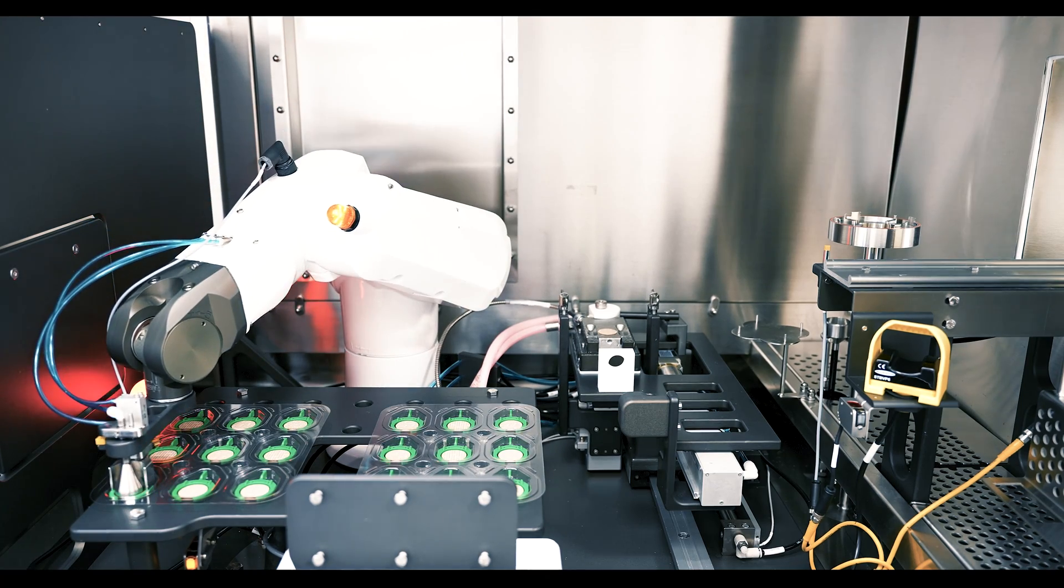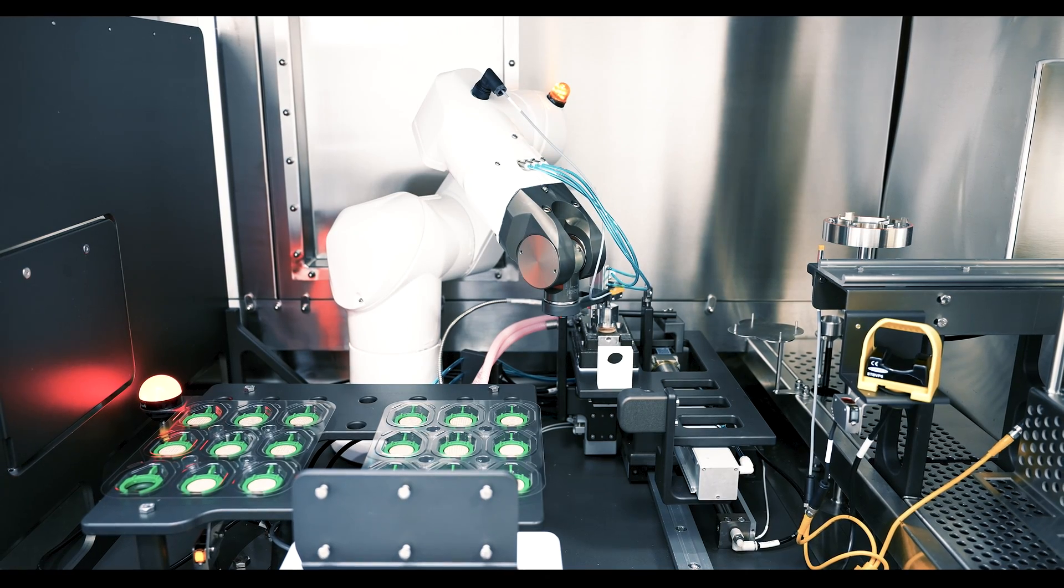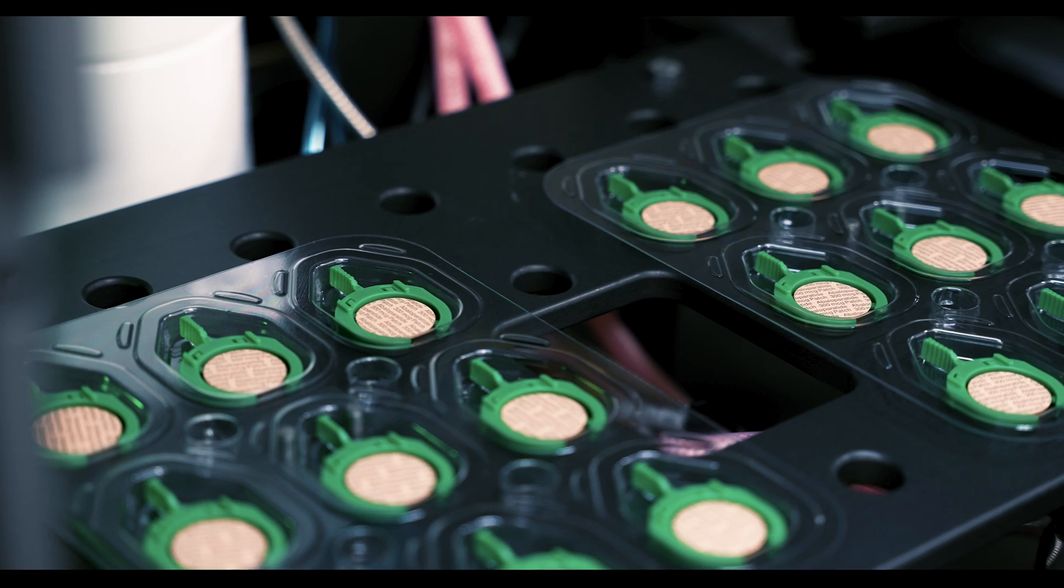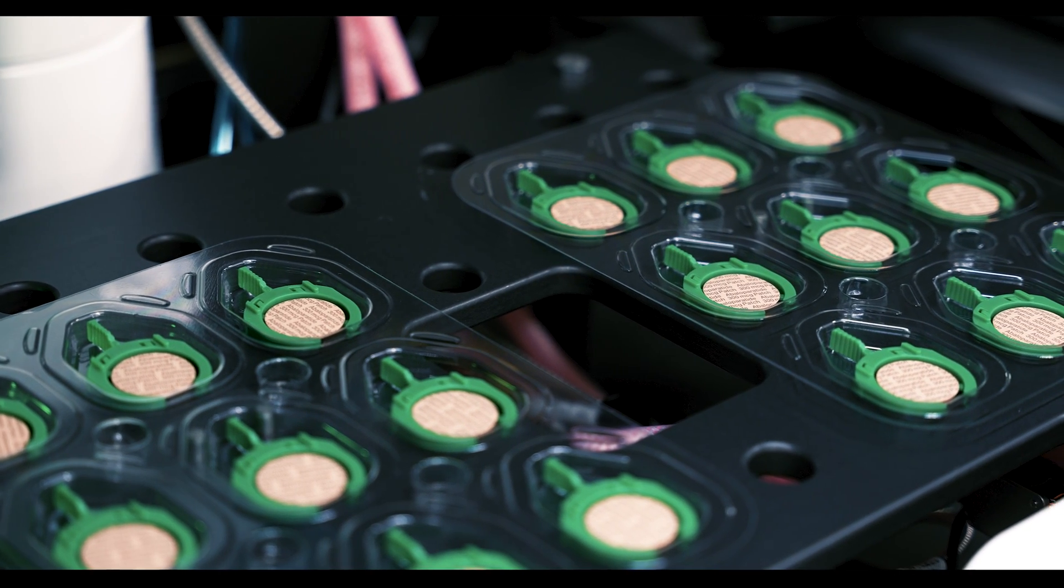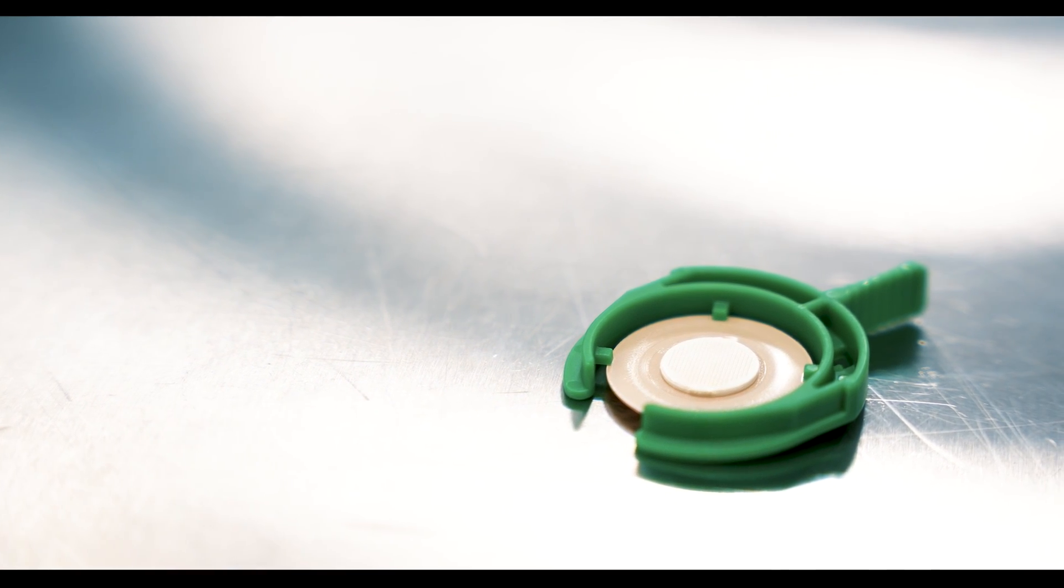So the part-to-part variability is measured in relative standard deviation or RSD. With this machine we're able to drop that RSD from double digits to single digits, which in turn reduces variability for the end user. This product can now meet specifications for the finished drug product.